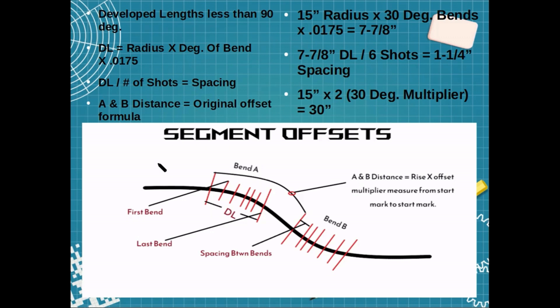Let's start off with getting the developed length of your two bends. With an offset you have two bends — Bend A and Bend B — which is typical with offsets. You need to find the developed length for these two bends. If you look on the top left hand side of the screen, it says 'Developed Lengths for Less Than 90 Degrees.'